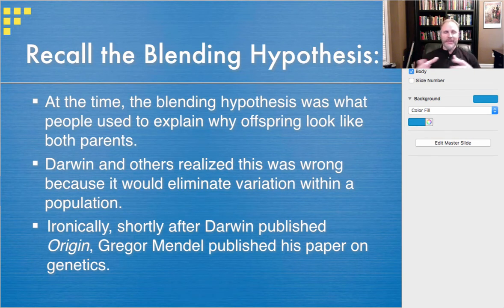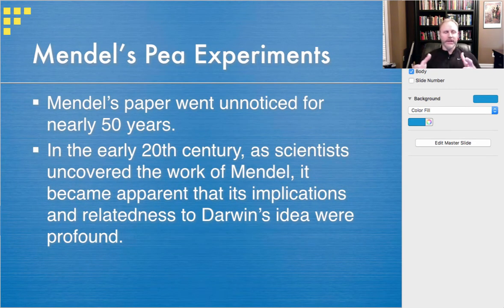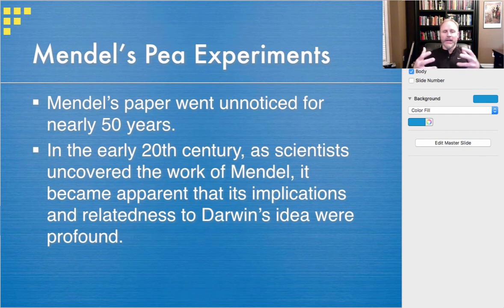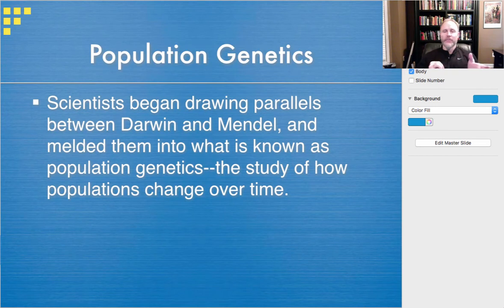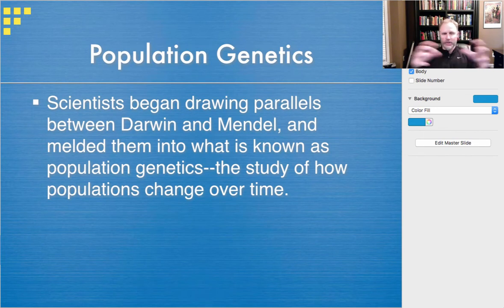The irony is that at the time Darwin was publishing — in the late 1850s and 1860s — Gregor Mendel was publishing his paper on peas and genetics. But Mendel's paper went unnoticed for about 50 years. It wasn't until the early 20th century that scientists uncovered Mendel's work, and it became obvious that what Mendel and Darwin were each saying had a lot of congruency and profound implications that meshed really well together. This gave rise to the idea of population genetics — studying how populations change over time, why they change, and what causes those changes.